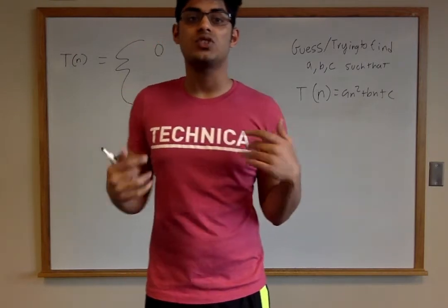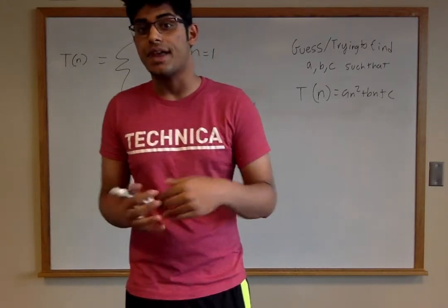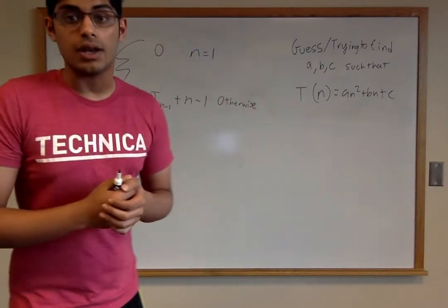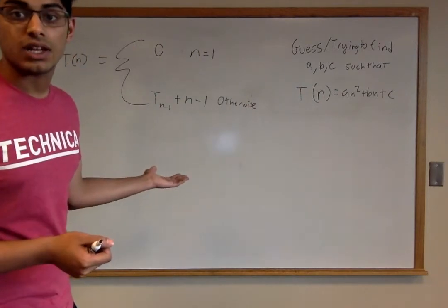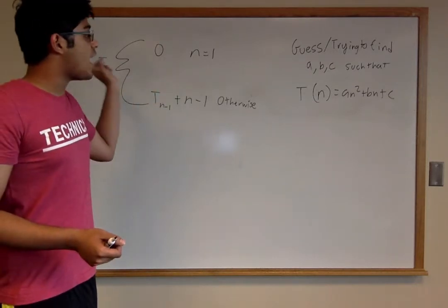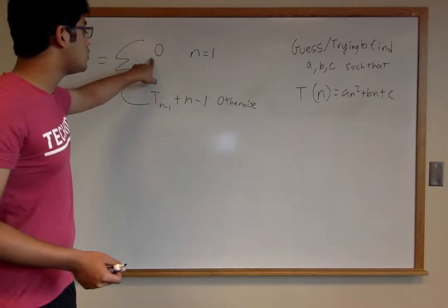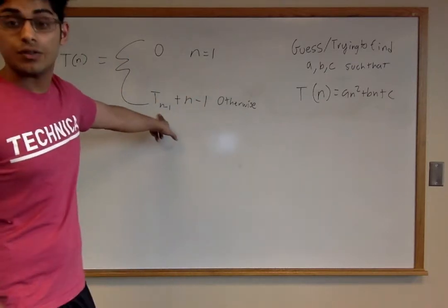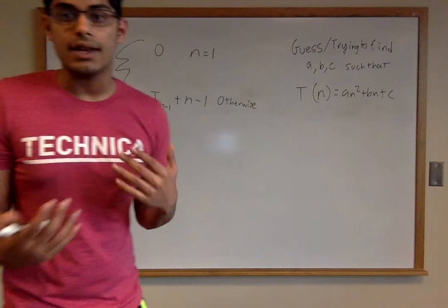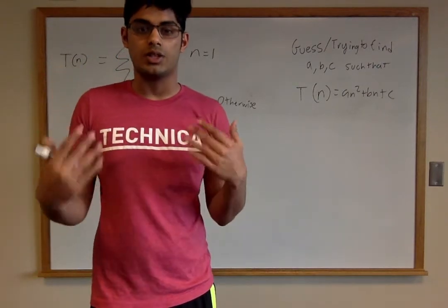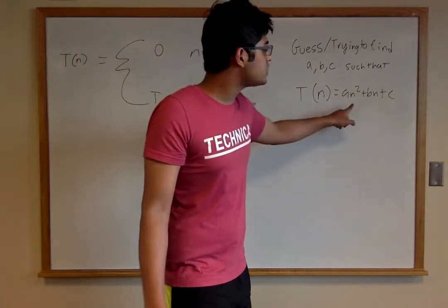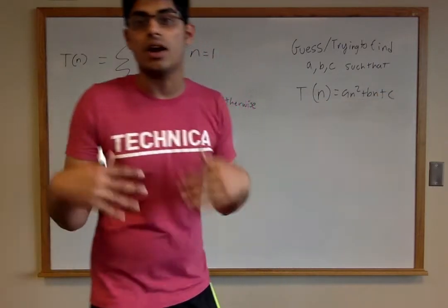This is actually going to be the quicksort worst case recurrence. If you're not familiar with that, don't worry — you will be in CS 351. So basically what it is is something similar to what you've seen in class. You have this recurrence: T(n) is defined so that if n is 1 it gives you 0, otherwise it's defined recursively as T(n-1) + (n-1). And what we're going to guess is that this recursive function is going to be equal to something in the form an² + bn + c.